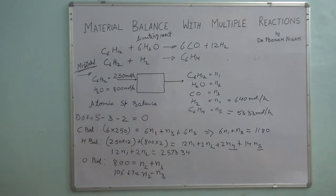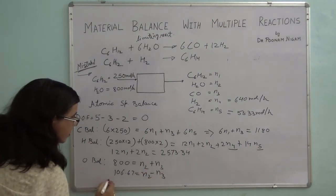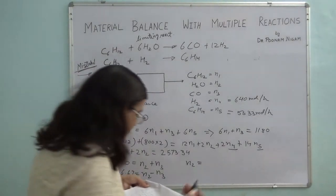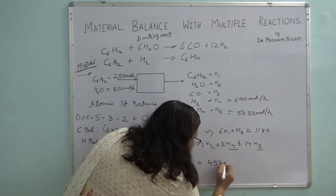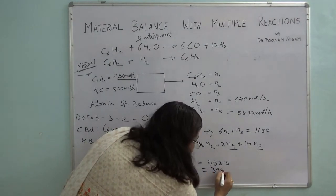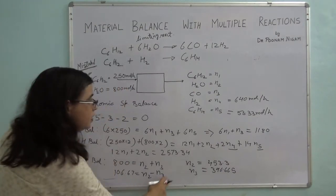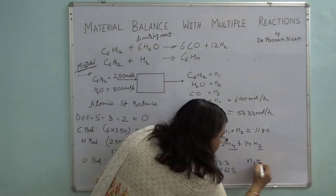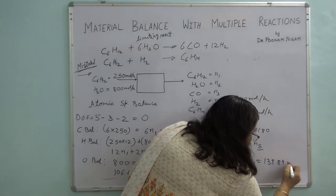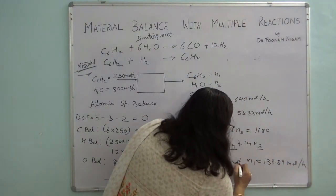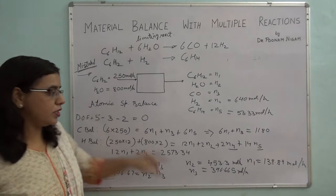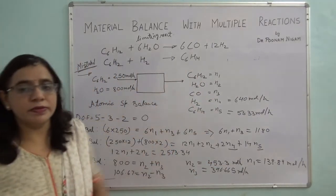With N2 and N3 known, substituting back into any equation gives N1 = 138.89 moles per hour. Don't forget to write units on all values. So with just three equations and three unknowns, you can quickly calculate N1, N2, N3, and the problem is solved using atomic species balance.